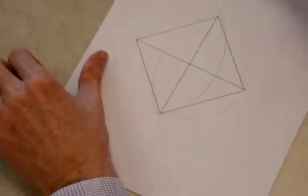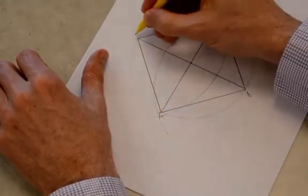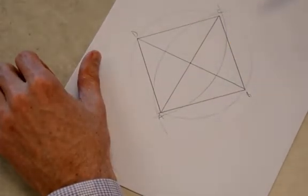Okay. So, why is this a square? We go A, B, C, D. So, why is this a square?